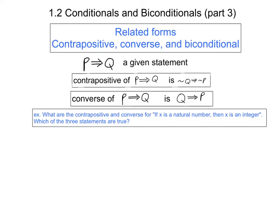And the integers are the positive and negative counting numbers: 0, 1, −1, 2, −2, etc. Now put the video on pause, write down your answers, and then we'll compare our answers.